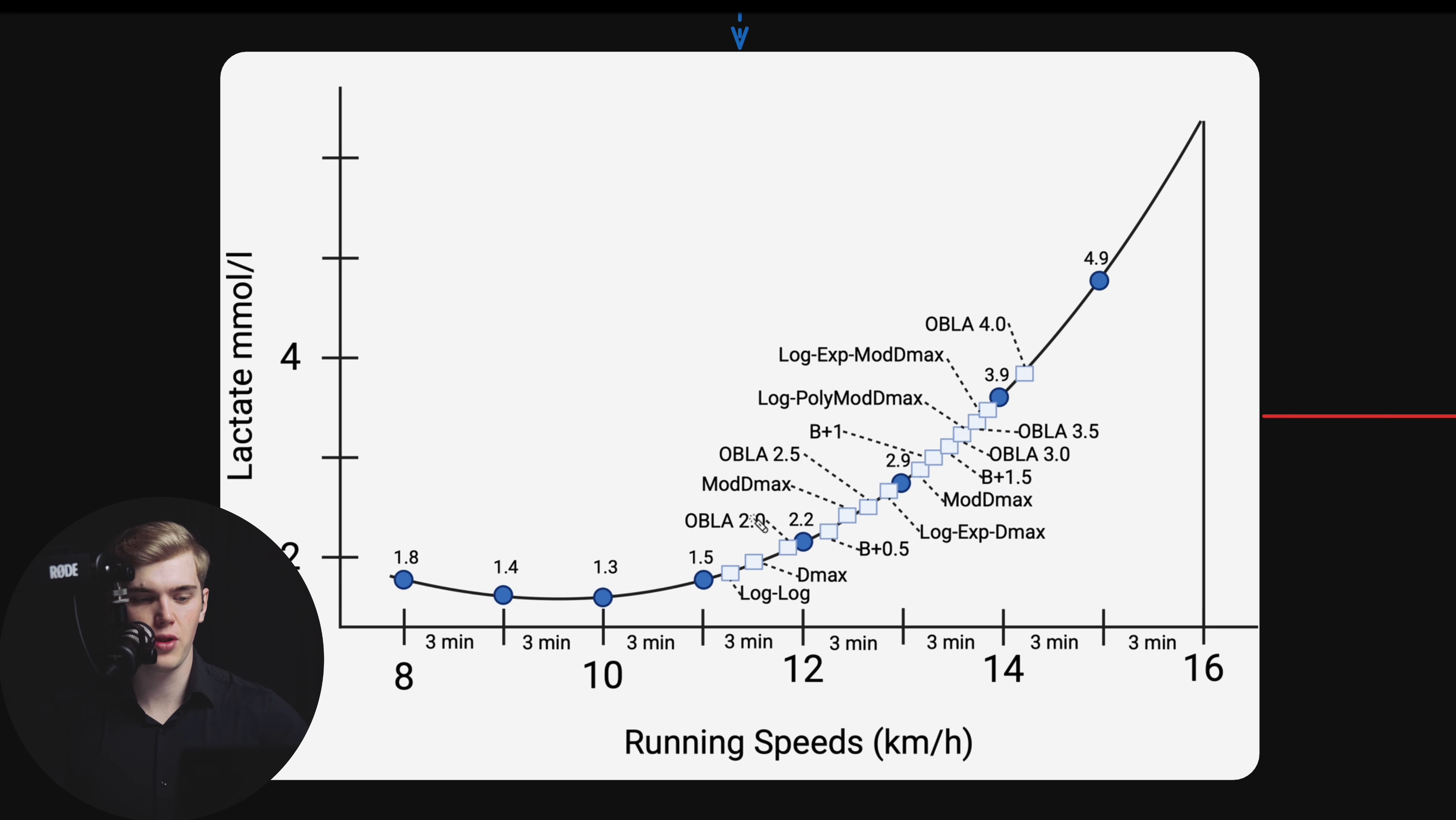The lab that you go to will use any one of these metrics to determine your LT1 and LT2. The issue is that most labs go the lazy way. They just measure lactate at 2.0 and lactate at 4.0 and they say, okay, this is where your LT1 is and LT2. This is what you commonly hear on the internet: your LT1 is at 2 millimoles per liter and your LT2 lies at 4 millimoles per liter. However, there is a major issue with such a simplistic approach, and the issue is, once again, it is inaccurate.